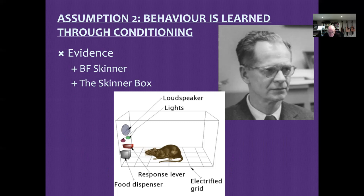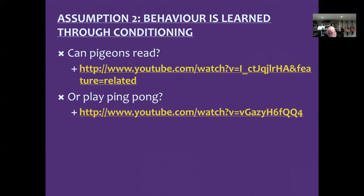The Skinner box has a loudspeaker, lights, and an electrified floor, all of which could act as stimuli for the rat inside. There's also a response lever and a food dispenser — a way of delivering food.